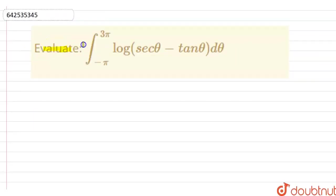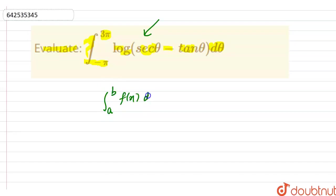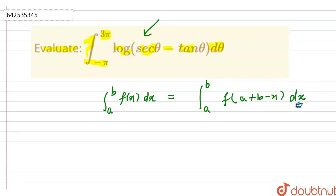Here the question is: evaluate the integral from minus pi to 3 pi of log(sec theta minus tan theta) with respect to theta. So basically in this question, we will find this definite integral. As we know, the property of definite integral states that the integral from a to b of f(x) dx